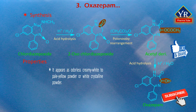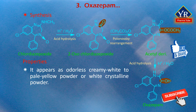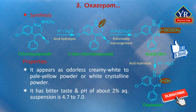Oxazepam appears as an odorless cream-white or pale yellow powder, or white crystalline solid. It has a bitter taste and the pH of a 2% aqueous suspension is approximately 4.7.